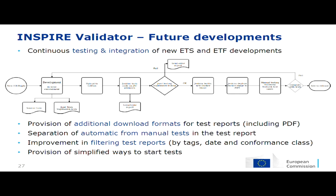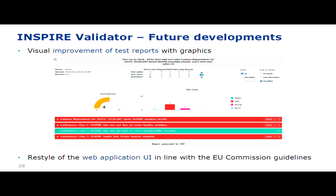Plans also include separating automatic from manual checks — for example by providing manual checks as a separate list at the end of the test report — and improving the way users can filter and find their test reports. Additional UI changes will help less expert users choose conformance classes. Graphics such as histograms and performance bars will be added to give a more immediate impression of the outcome, and by end of year there will likely be a full UI restyle aligned with European Commission graphics.